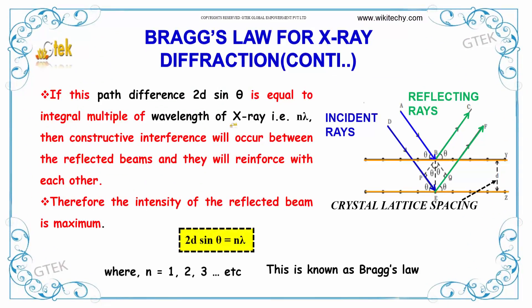If the path difference 2D sin theta is equal to integral multiple of X-rays n lambda, then constructive interference will occur between the reflected beams and they will reinforce with each other. Therefore, the intensity of the reflected beam is maximum. So 2D sin theta equals n lambda, where n equals 1, 2, 3, etc. This is known as Bragg's Law.